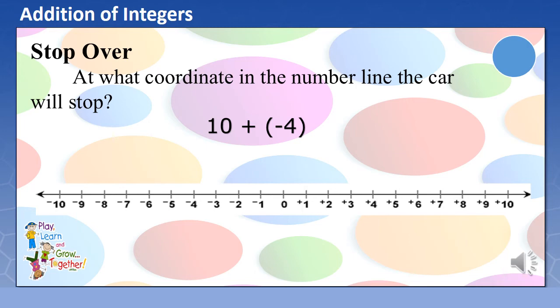For 3 points, at what coordinate in the number line will the car stop?